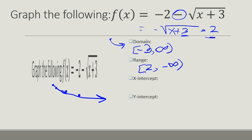Again, we don't have an x-intercept, and our y-intercept is going to be where our x-value is 0. So negative 2 minus the square root of 3.